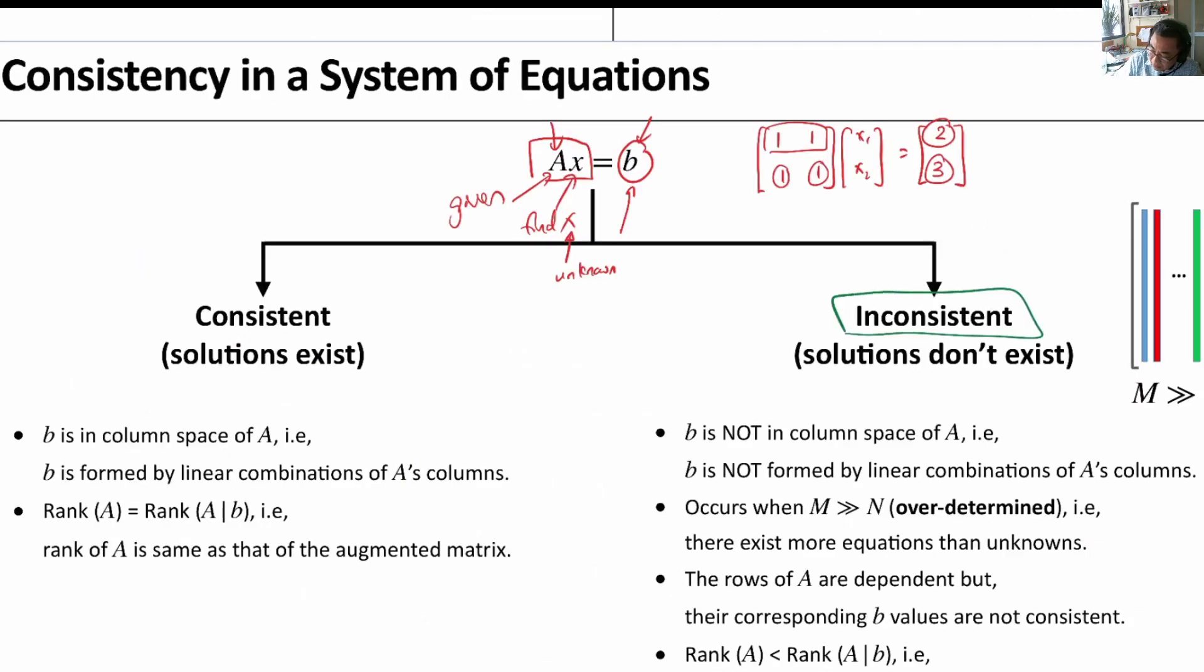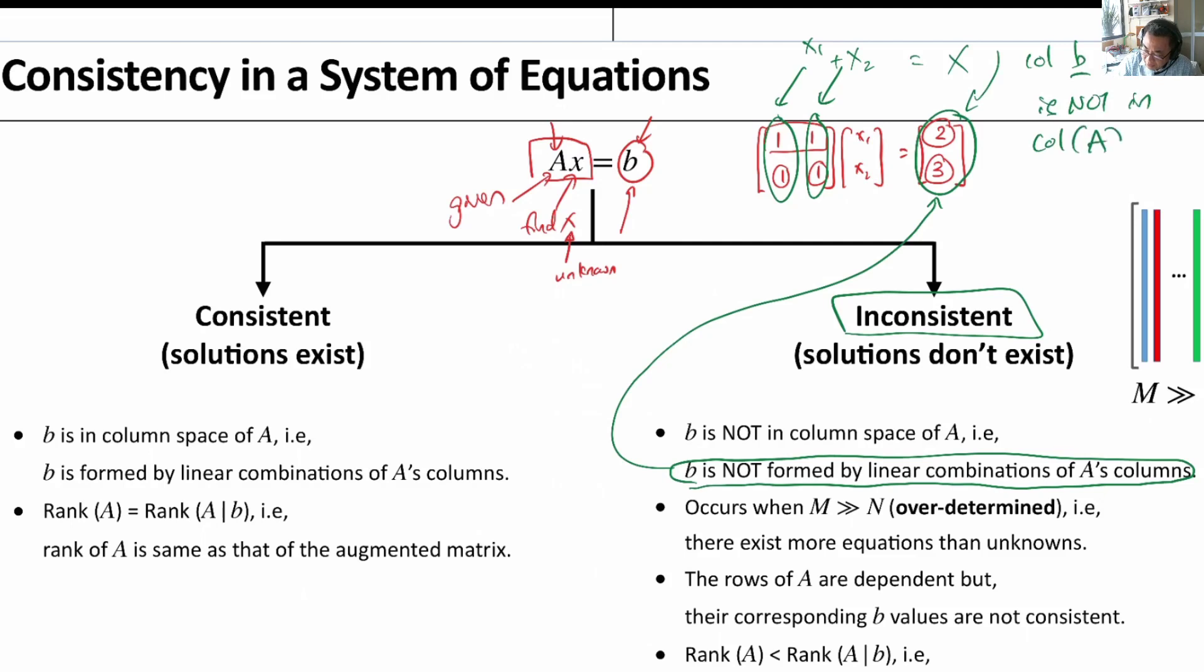Now, let's discuss the right-hand side inconsistent equation. The easiest way to understand is B is not found by a linear combination of A because in this example, 2, 3 cannot be formed by these columns or any combinations of this column. You can try to multiply X1 multiplied by the first column, X2 multiplied by the second column and add them up and there is no way you can get this value.